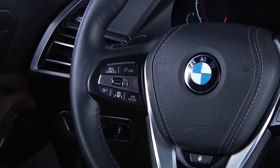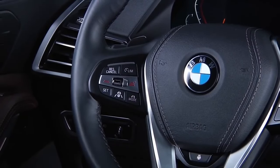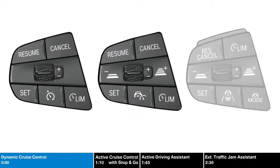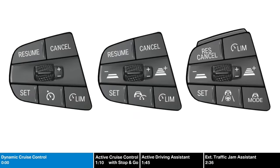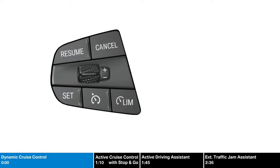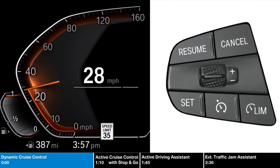The advanced driver assistance systems, including cruise control, can be activated via buttons located on the steering wheel. The layout of these buttons depends on how your BMW is equipped. For models with standard equipment, your layout will look like this.